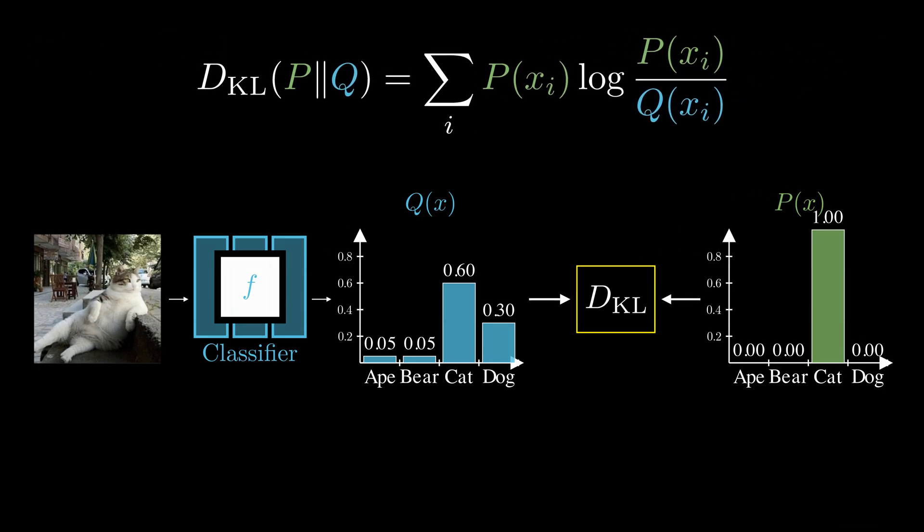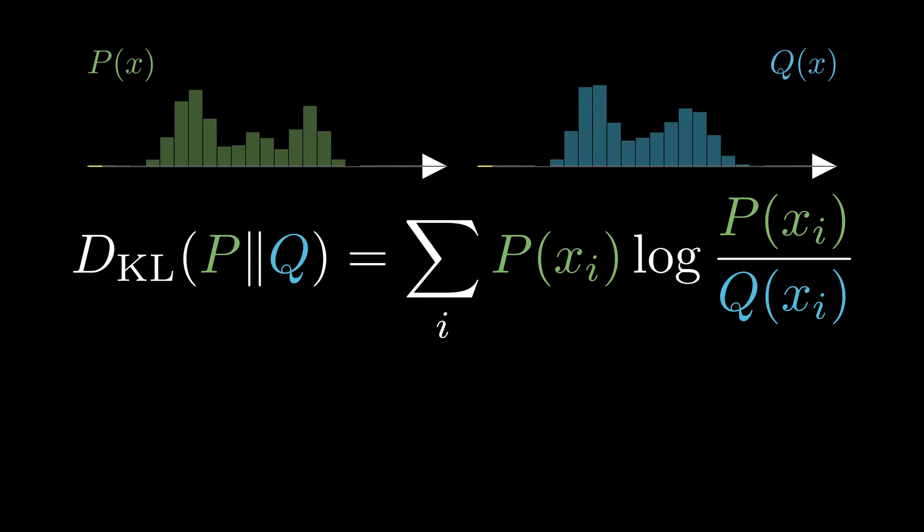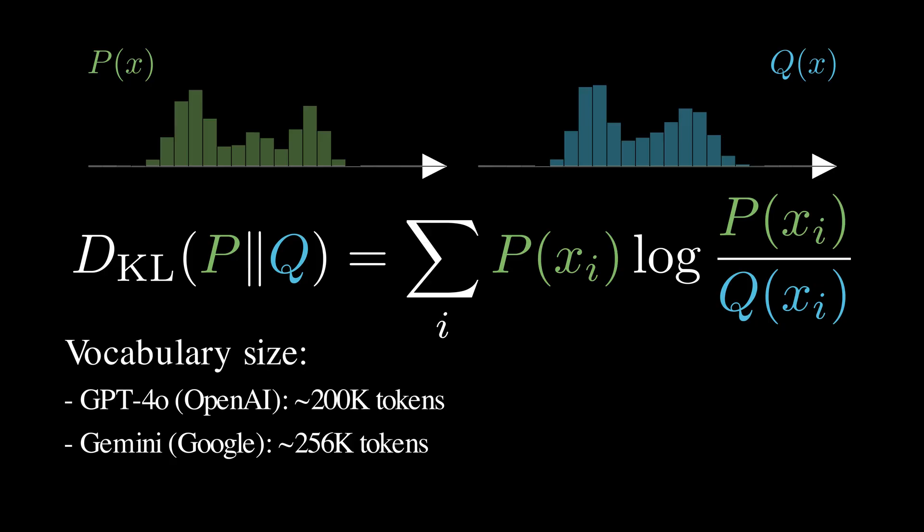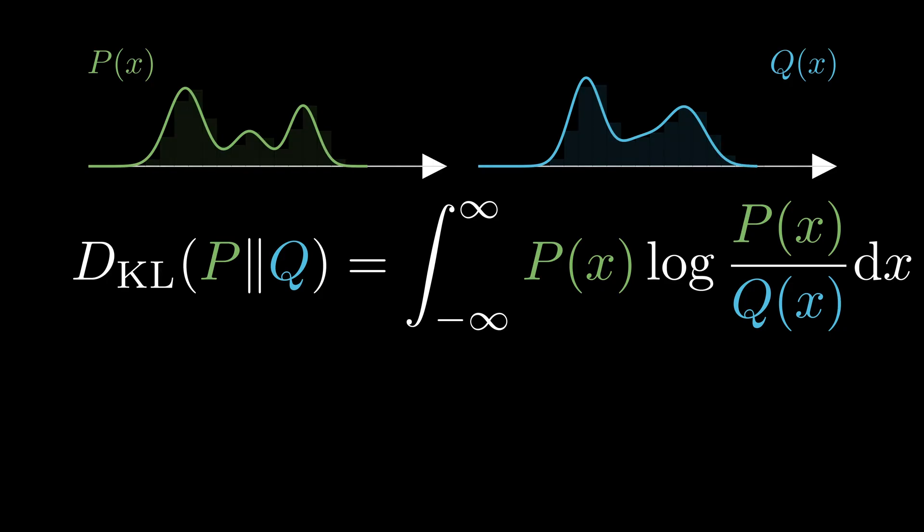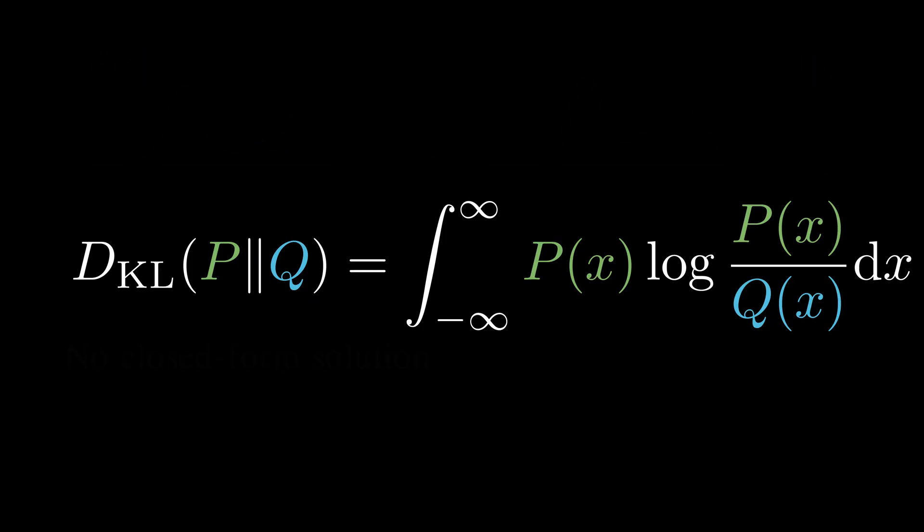But there is a problem. In many applications, computing KL divergence exactly is expensive. For discrete distributions, we need to sum over all possible outcomes. In language models, these outcomes are tokens, and modern models can have vocabularies with over 200,000 tokens. For continuous distributions, it's even worse. Unless we are dealing with something simple like Gaussians, there is no closed-form solution for the KL divergence. In short, exact computation is often infeasible, though we need a way to efficiently estimate the KL divergence.